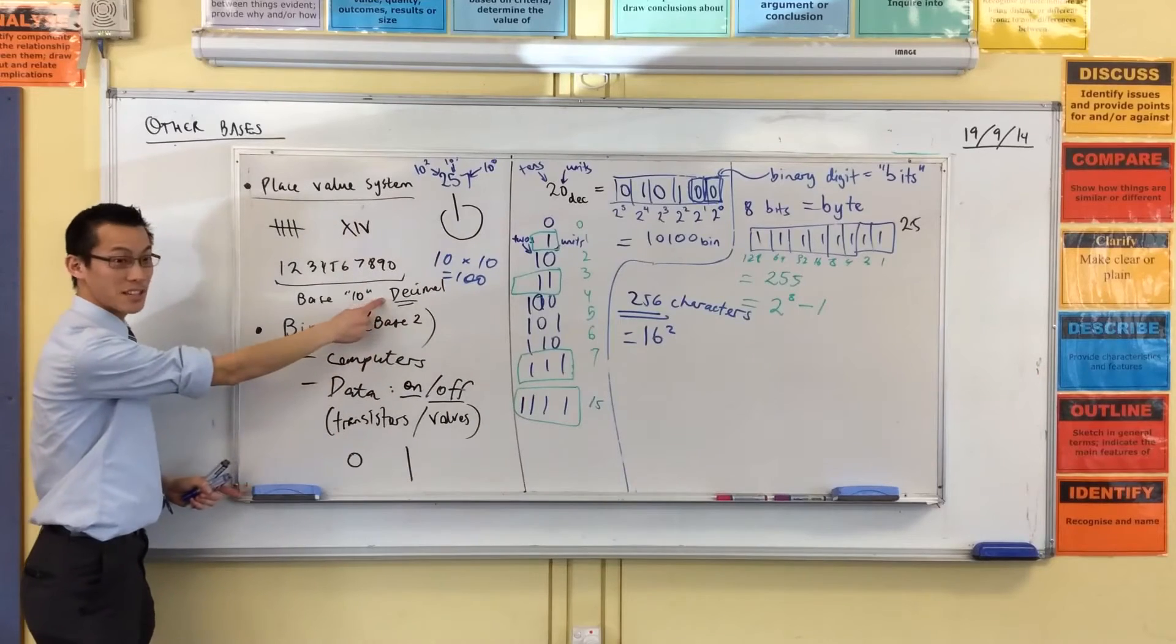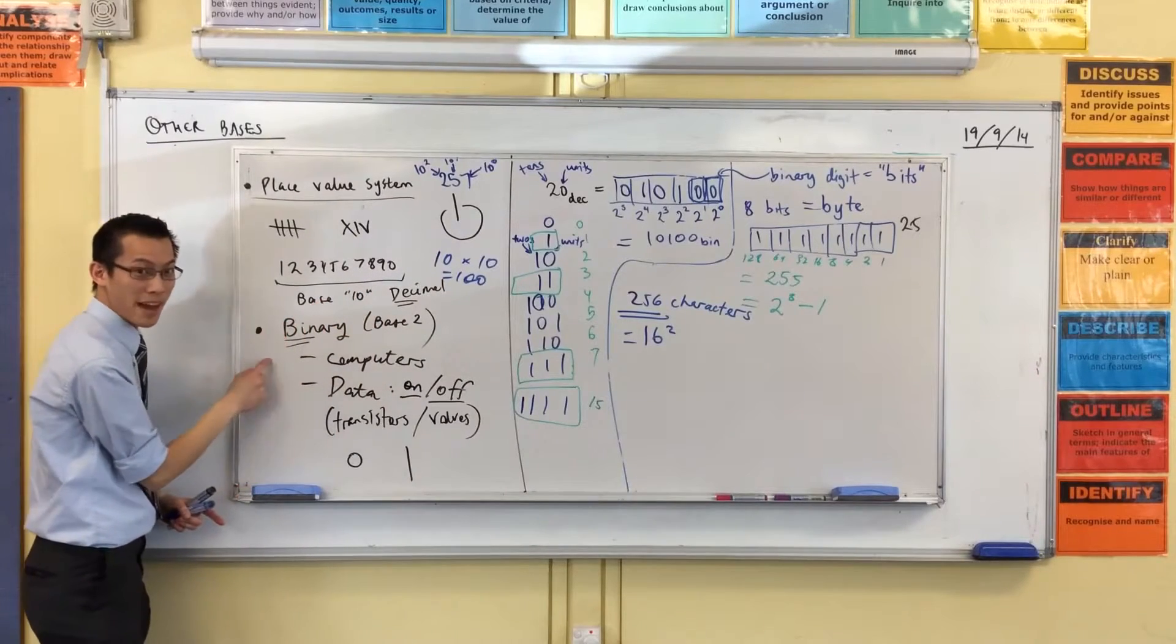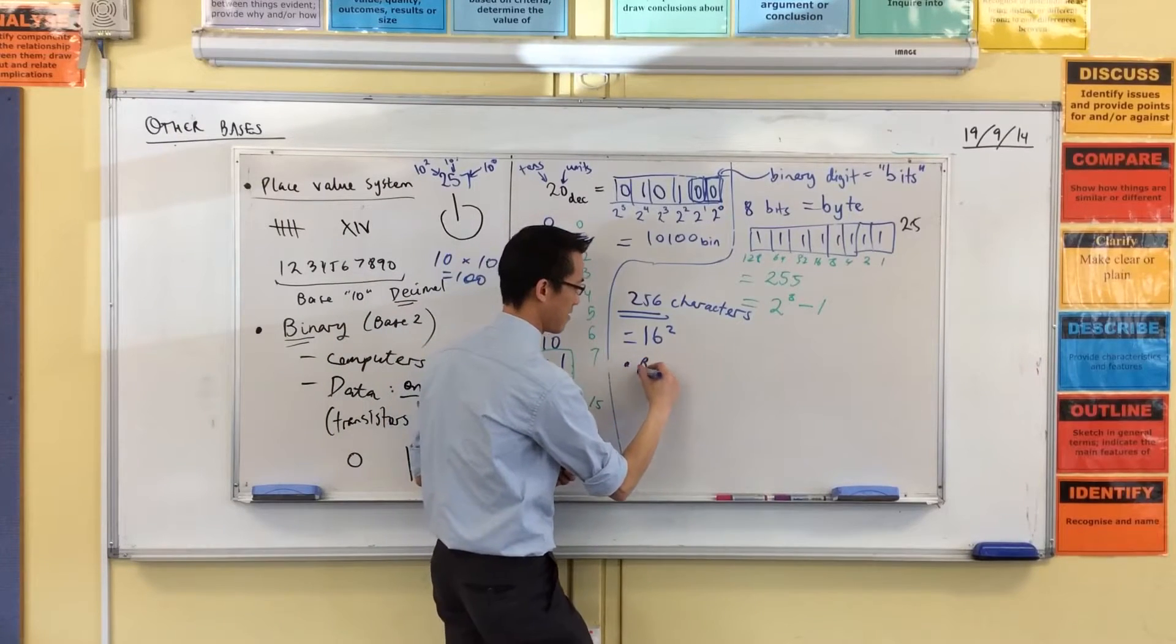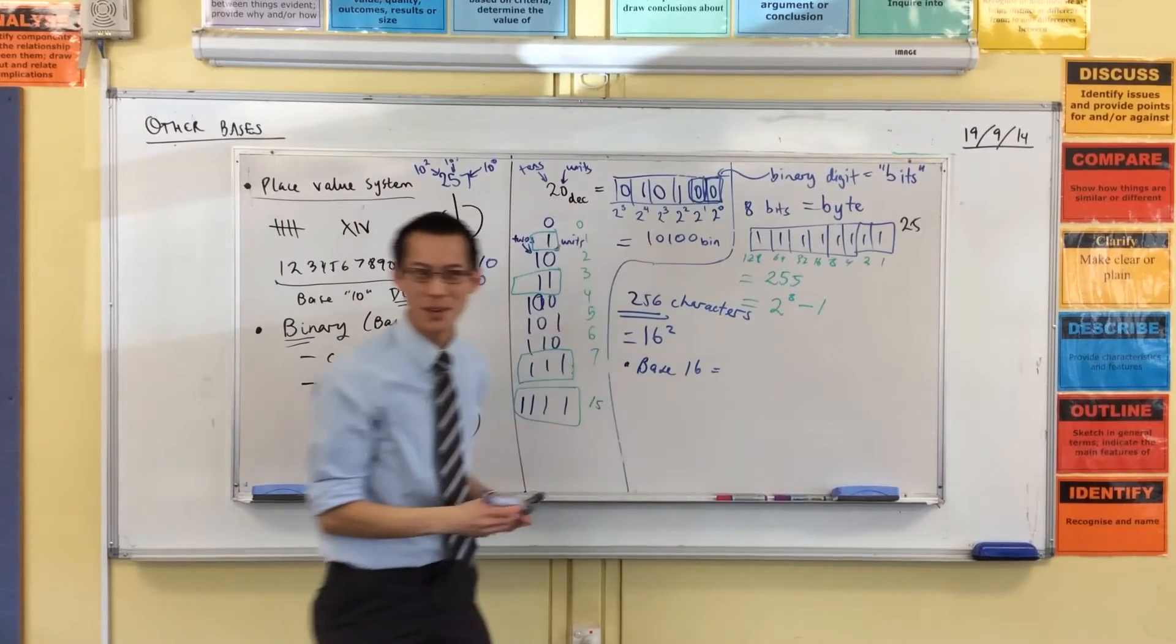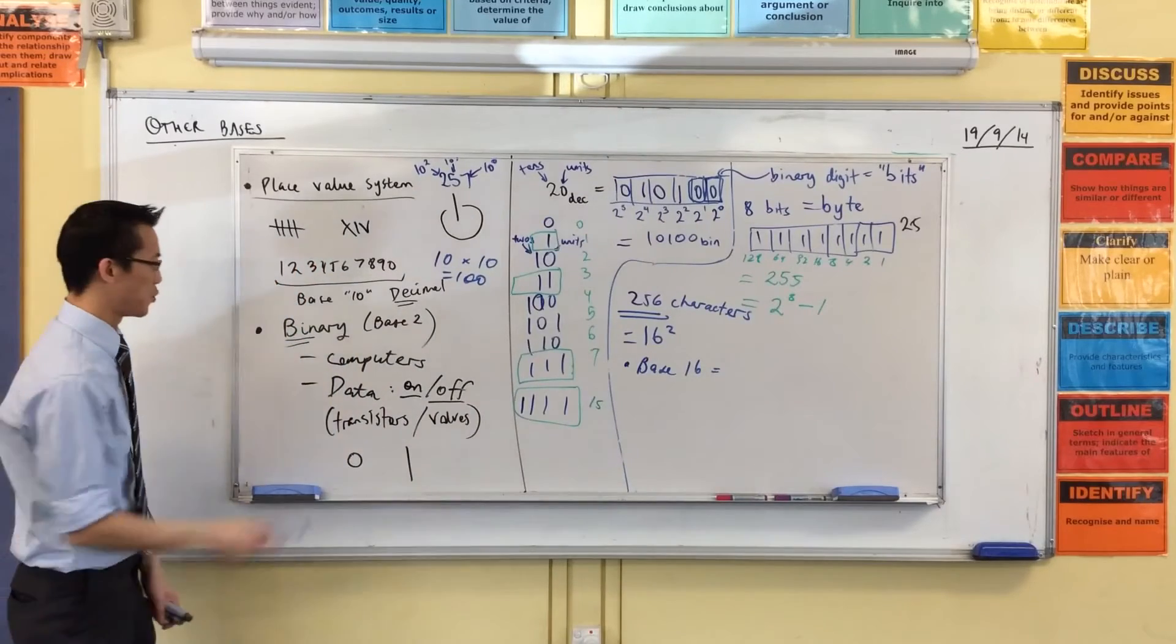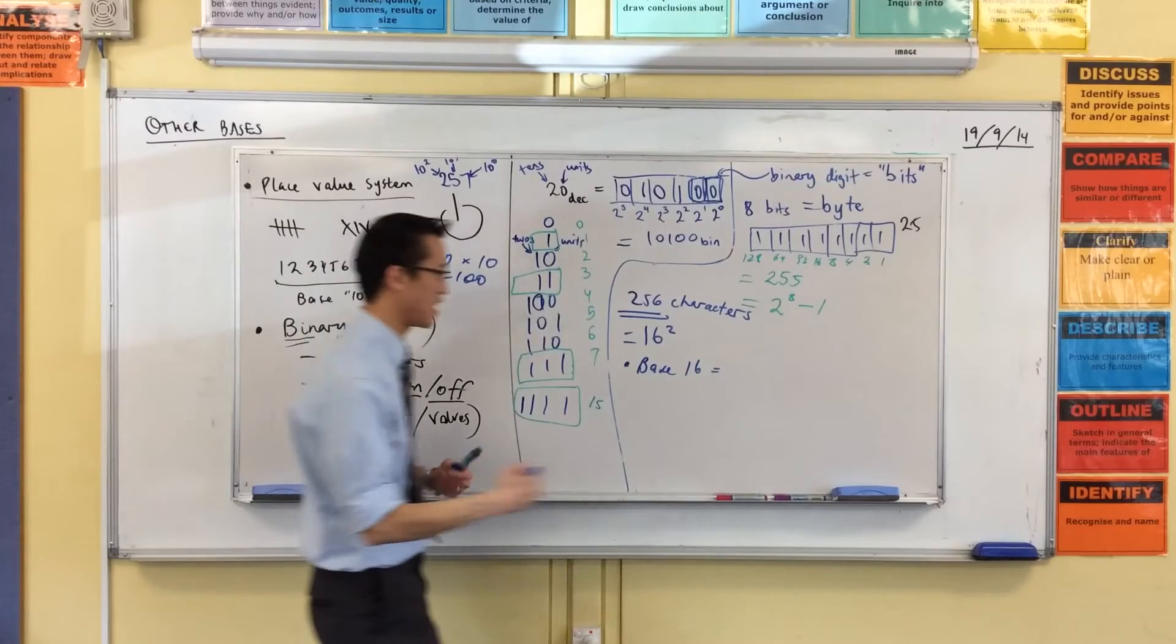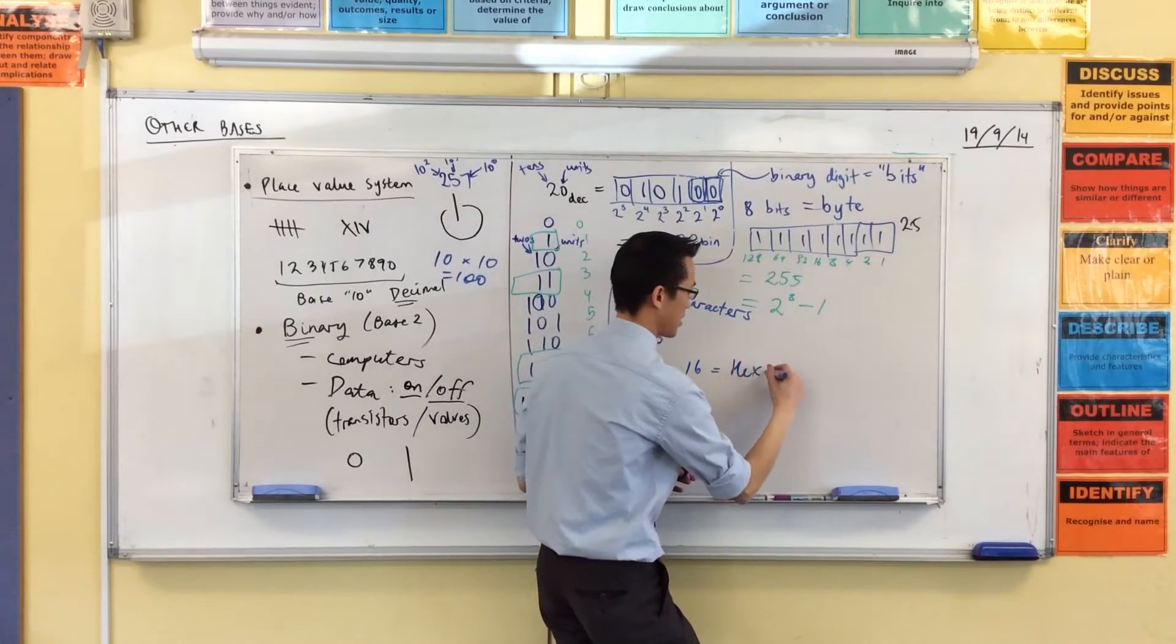Base 10 is called decimal, base 2 is called binary, base 16... Does anyone know what it's called? Well, you want 10 and then you want to add 6, right, so they call it hexadecimal.